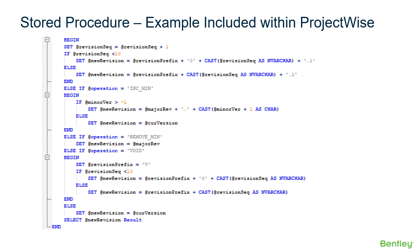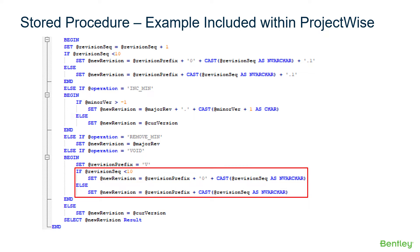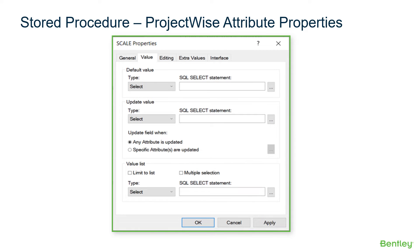If we pass the operation REMOVE_MIN, the code will truncate the decimal and minor number. There is also a hidden operation called void. If void is passed to the stored procedure, it will change the prefix to a V and return the version number as it was submitted.